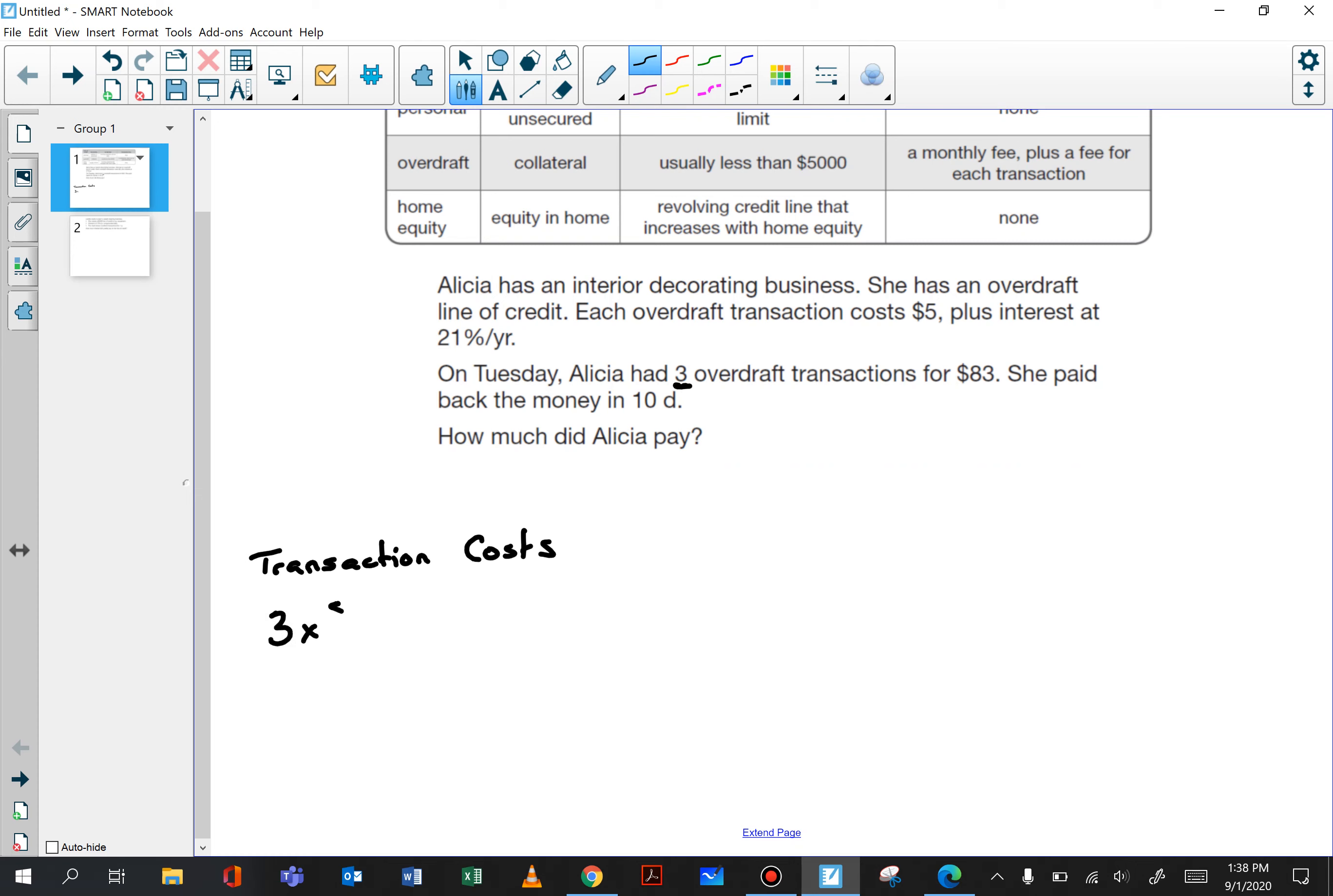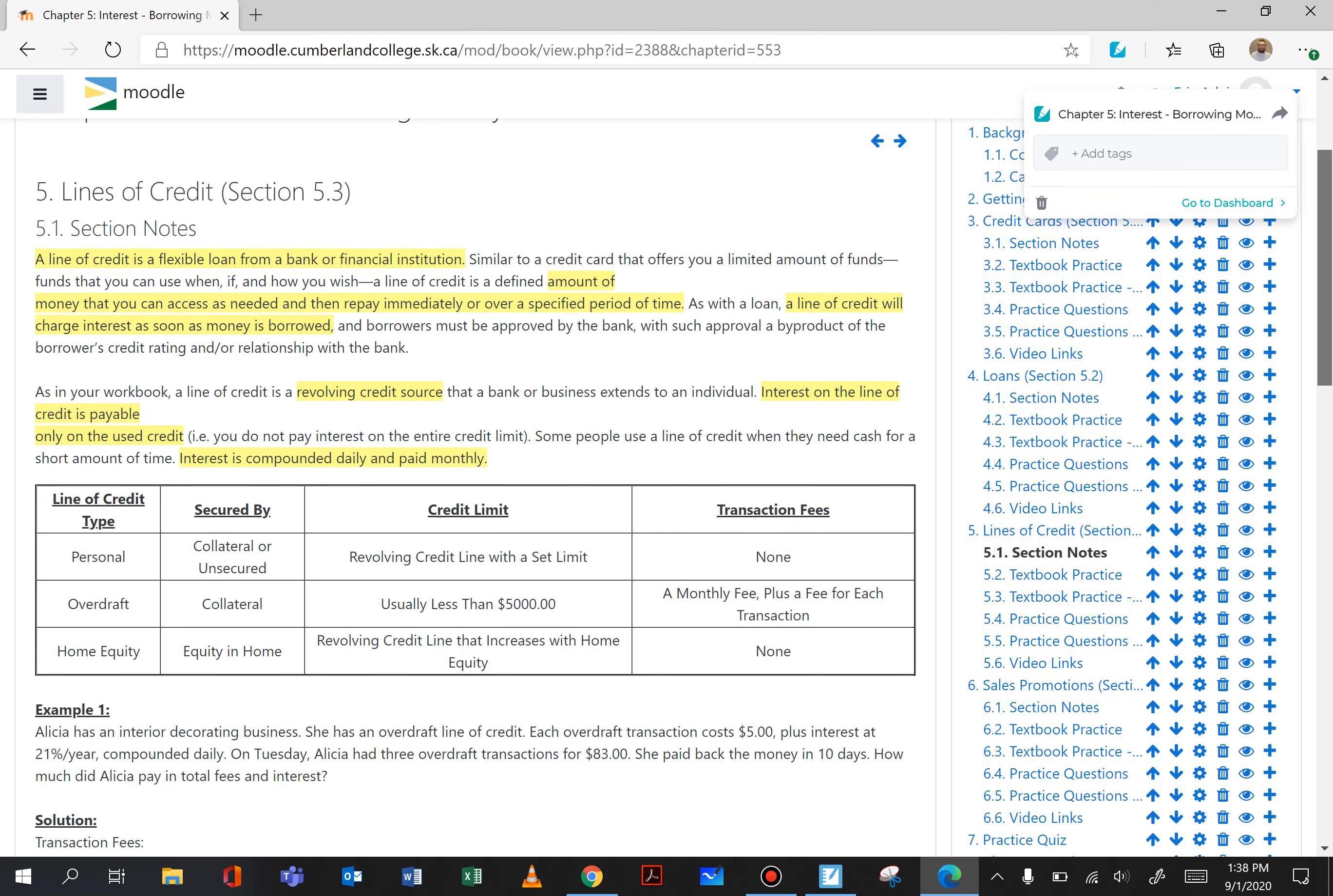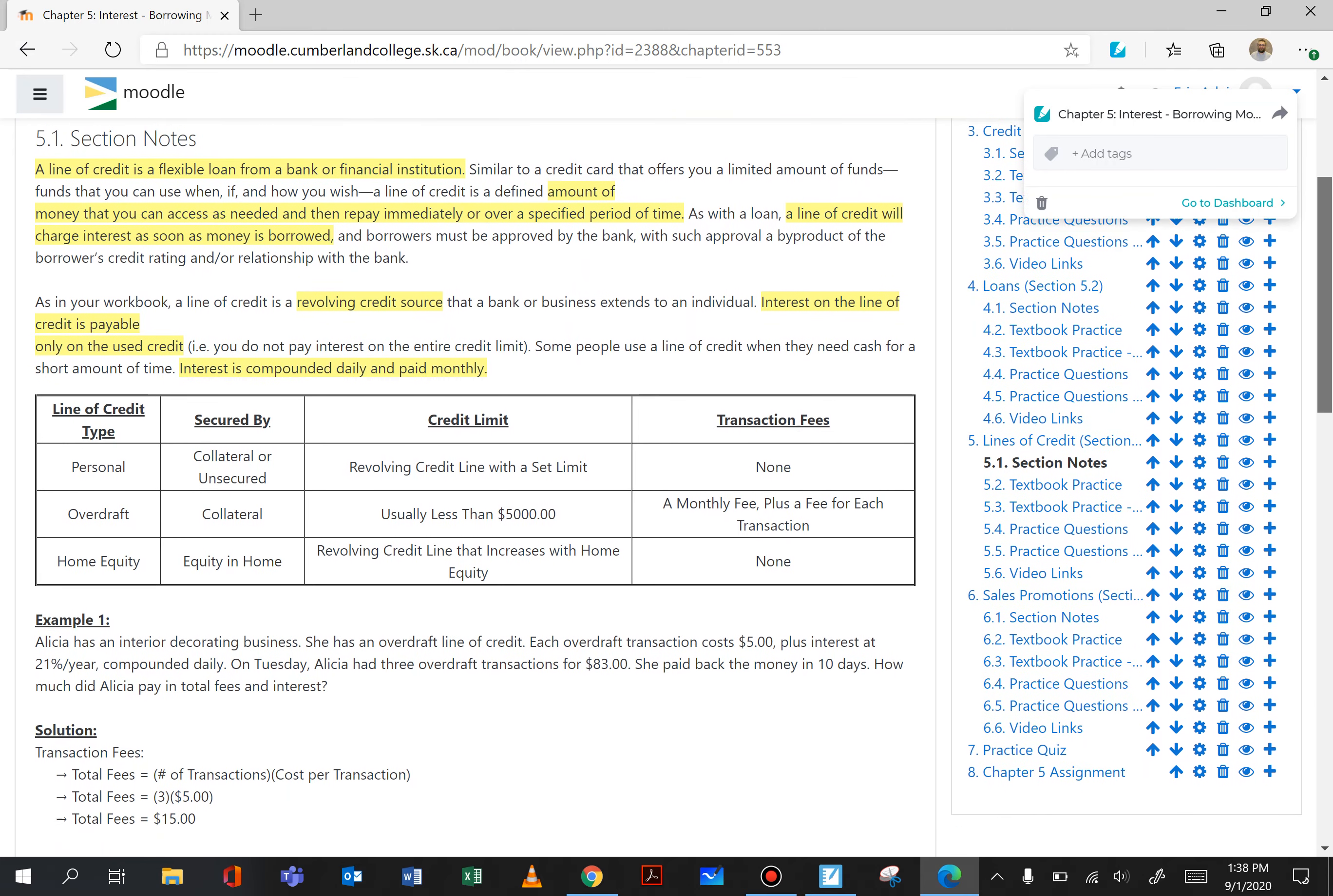We know each transaction is $5 and she had a total of three, so three times $5 each, very straightforward calculation. Transaction costs $15 in total. We also need to figure out how much she paid in interest as well.